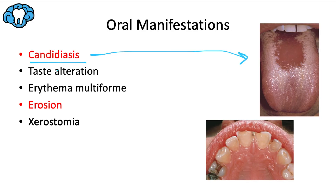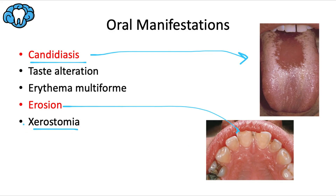Candidiasis could specifically manifest as median rhomboid glossitis. Proton pump inhibitors can also alter taste perception, and erythema multiforme has been reported in some people who take H2 blockers or proton pump inhibitors. Erosion of enamel due to regurgitation of gastric acid is extremely important, and proton pump inhibitors are especially notorious for causing dry mouth, which makes erosion worse and increases risk of caries, periodontal disease, and candidiasis.